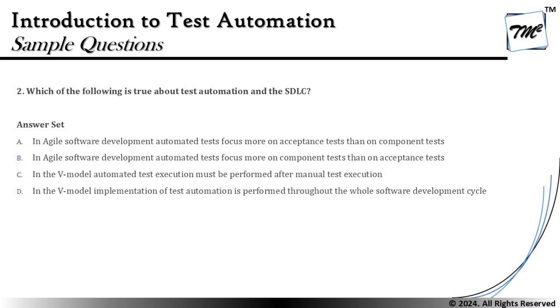Option C says: in the V-model, automated test execution must be performed after manual test execution. That is a common assumption — we start with manual then proceed to automation — but it is not a rule. There is no hard-coded requirement that you must perform manual testing before automation. You can kick-start testing with automation directly, so this statement is not valid.